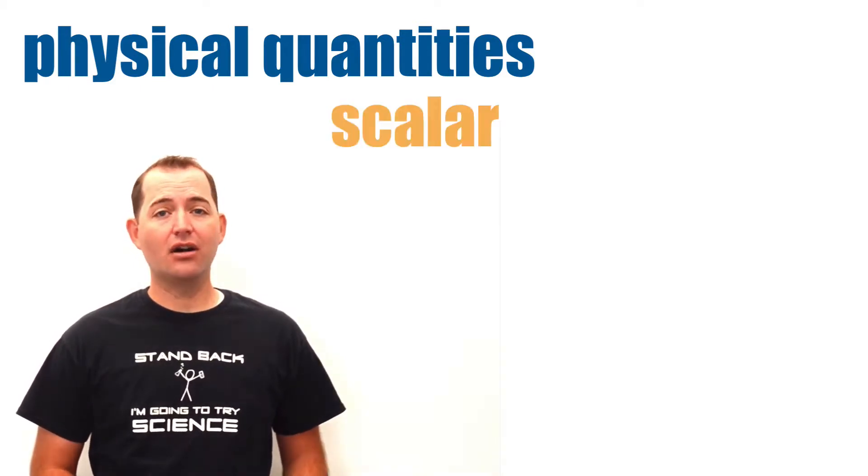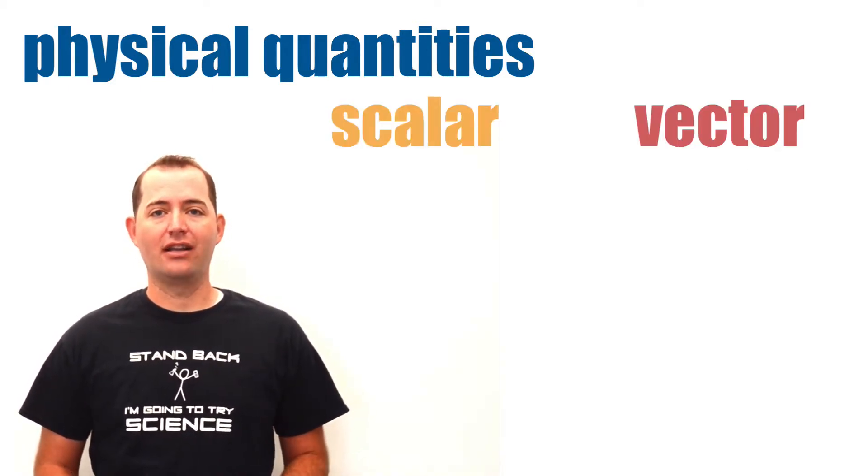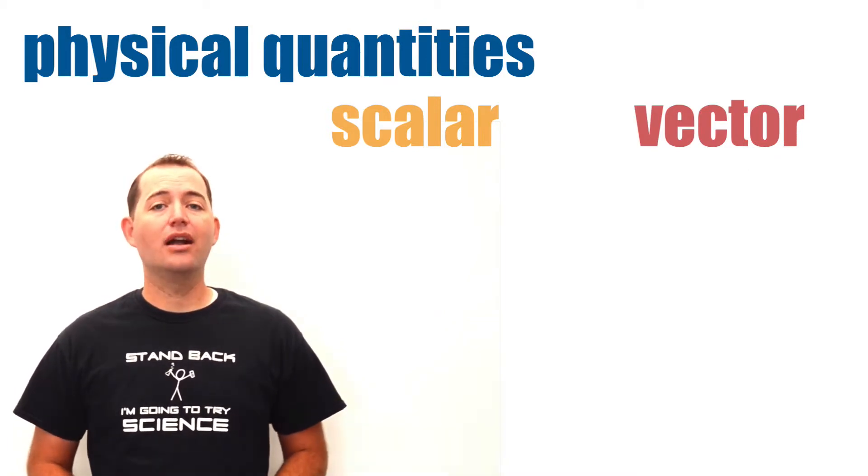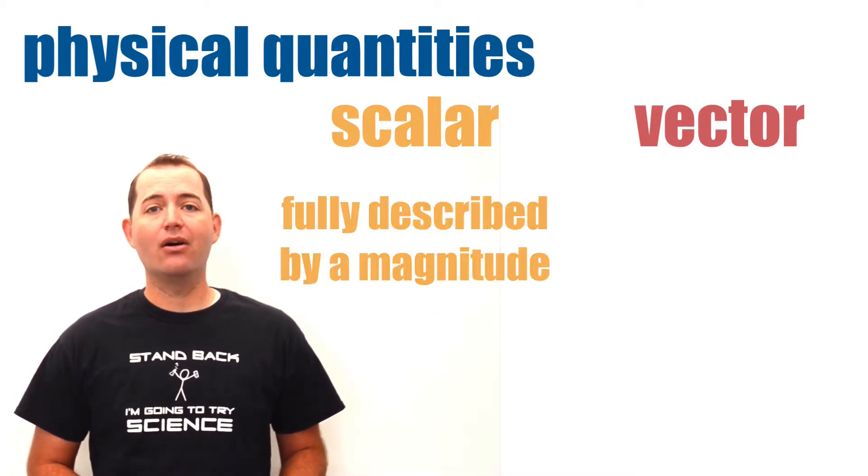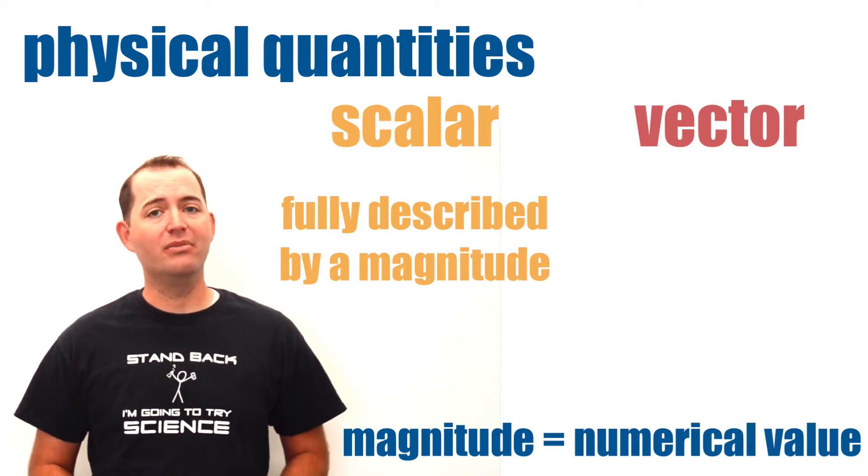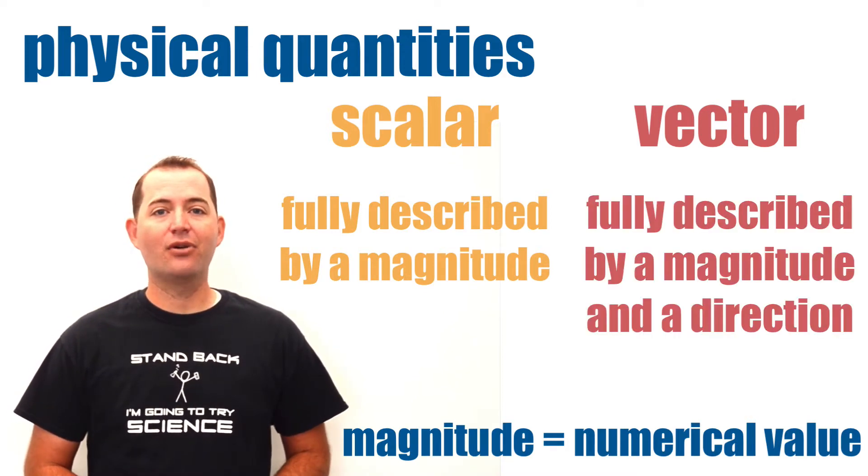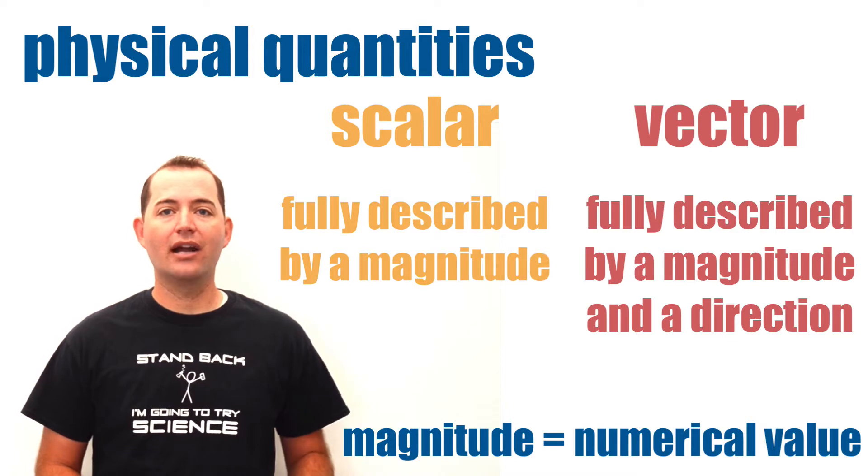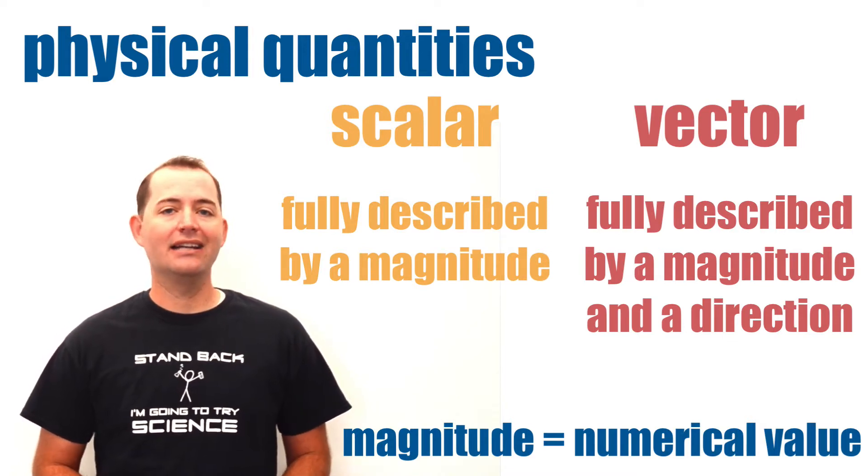Physical quantities can be classified as either a scalar quantity or a vector quantity. Scalars are quantities that can be fully described by only a magnitude or a numerical value. Vectors are quantities that are fully described by a magnitude or a numerical value and a direction.